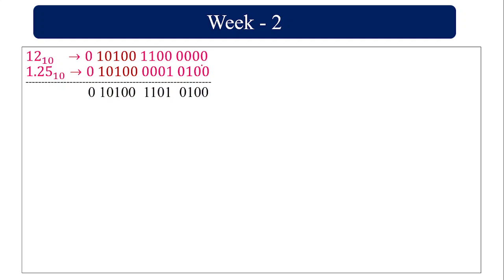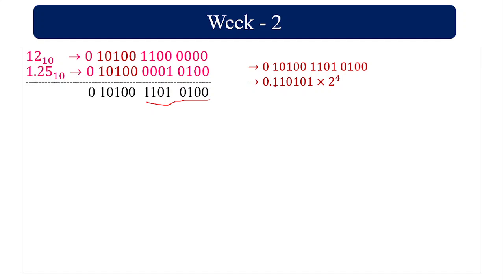Now adding 12 and 1.25 in 14-bit revised format: the sign and exponent parts remain unchanged. Only the mantissa parts are added: 0+0, 0+0, 0+1, 0+0, 0+1, 0, 0, giving the result mantissa. The sum of 12 plus 1.25 is 0.110101 into 2 power 4, where the exponent is 10100, which in reverse gives 2 power 4.